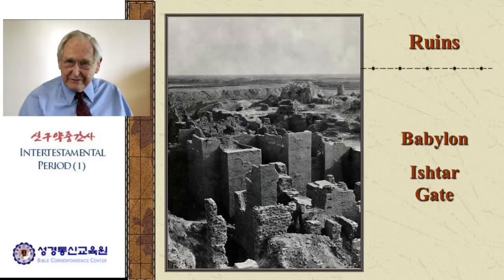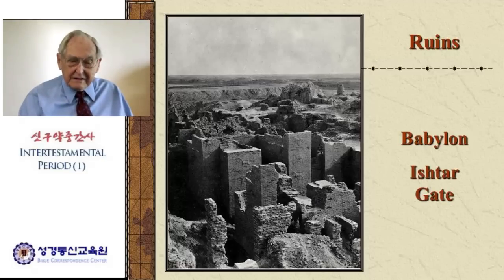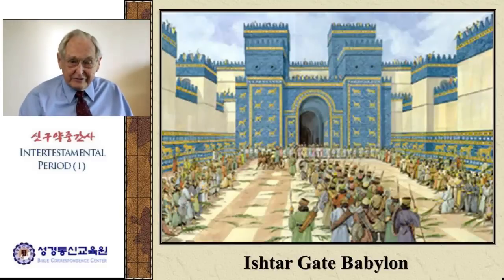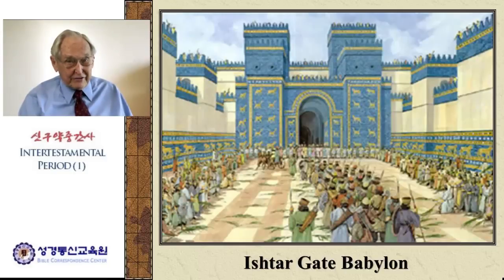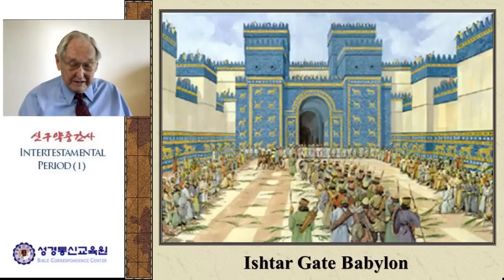Here are some more ruins of the Ishtar Gate. You'll see that just barely in the background there are animals that appear in the brickwork of the Ishtar Gate. Here is an artist's rendition of what the Ishtar Gate apparently looked like. We do know from other descriptions pretty much what this area looked like, and the Ishtar Gate probably looked just about like this. In the front of the Ishtar Gate leading into the gate is the old processional way where they had many of their ceremonial events.